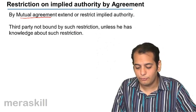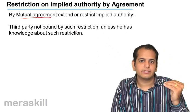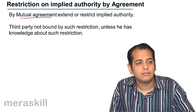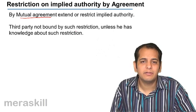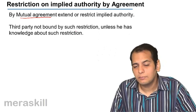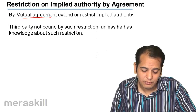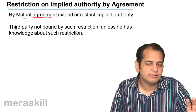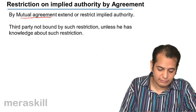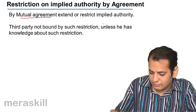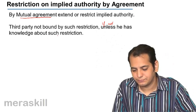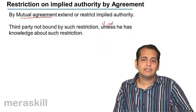Third parties will not be bound by such restrictions. If the partners restrict the implied authority of any partner, third parties will not be bound, because it is a mutual agreement between the partners — the third party is not aware of the restriction and is not supposed to know it. However, if the third party knows that the implied authority of a partner has been restricted, then they become liable. So the third party is not bound by such restrictions unless they have no knowledge about them — but if they have knowledge, then they will be bound.